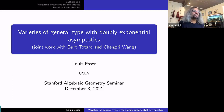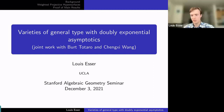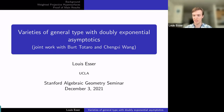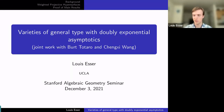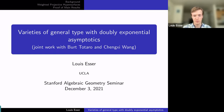Today we're glad to have Lewis Esser from UCLA, who's going to tell us about varieties of general type with doubly exponential asymptotics. Thanks so much for the introduction and for the invitation. The slides should be available on Discord so people can follow along. Please interrupt me with questions anytime. Everything I say today will be joint work with Bert Totaro and Chung-Chi Wang, who are both at UCLA.